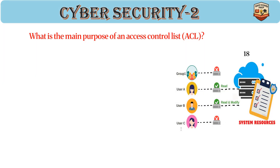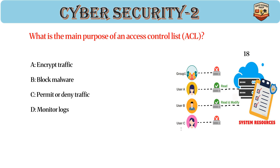What is the main purpose of an access control list (ACL)? Answer: C. Permit or deny traffic. ACL filters traffic based on IP, port, and protocol. Implemented on routers and firewalls. Used to control network access.